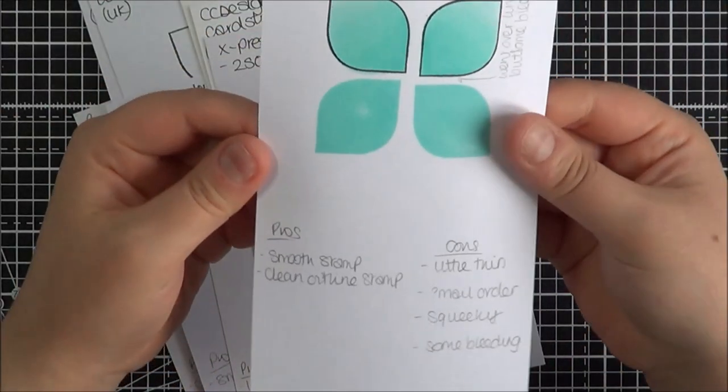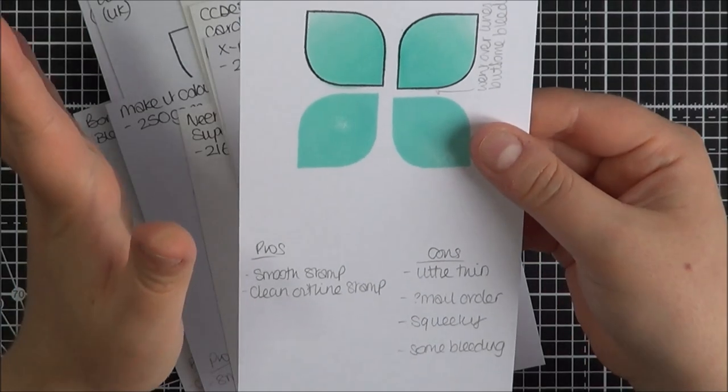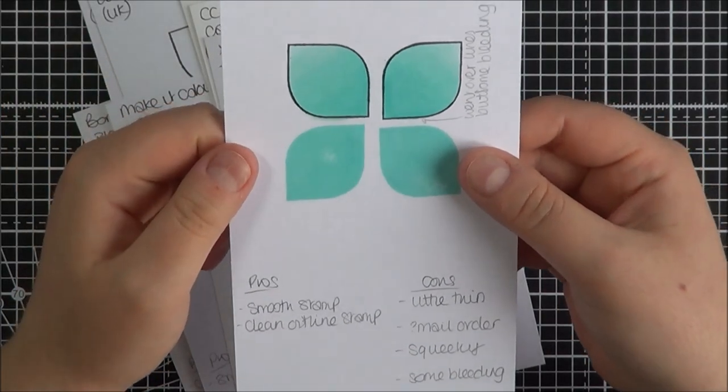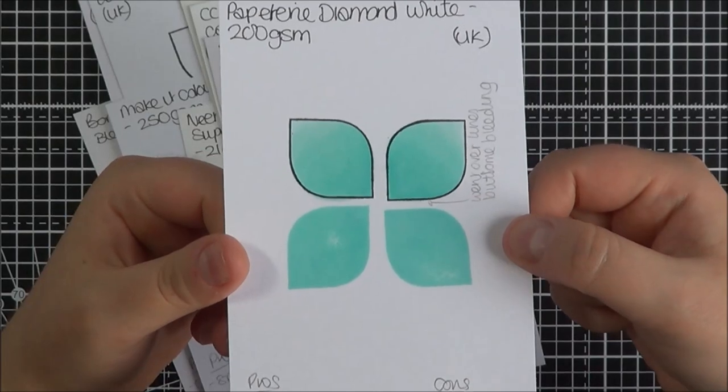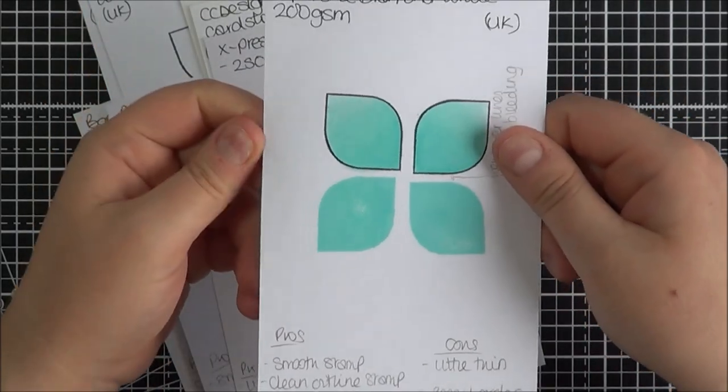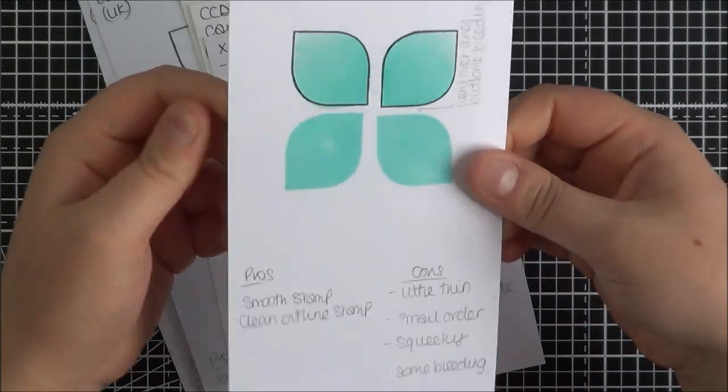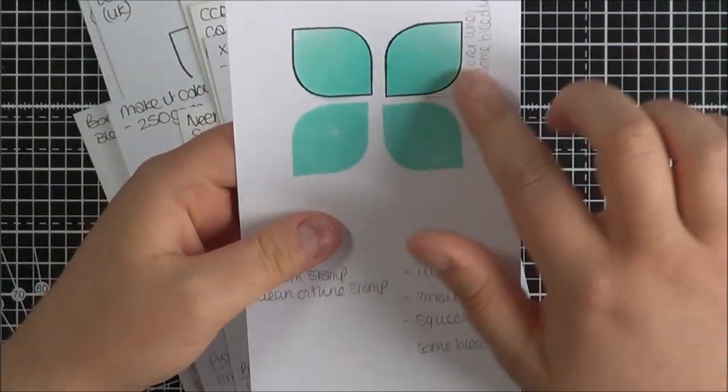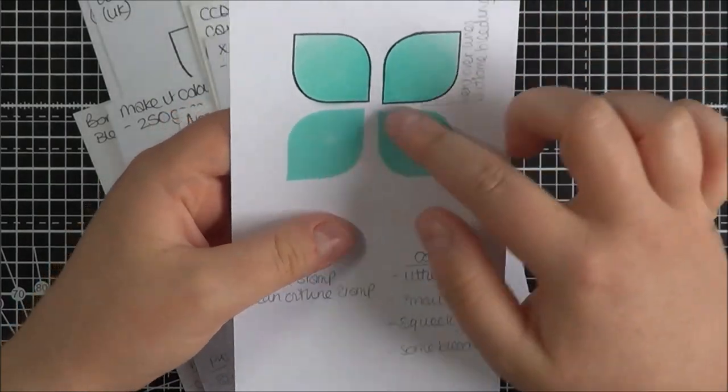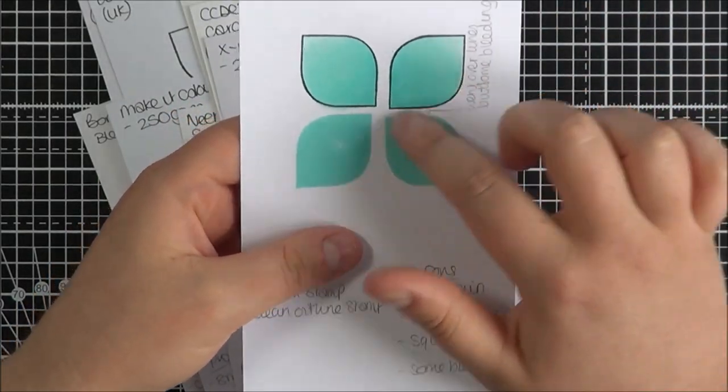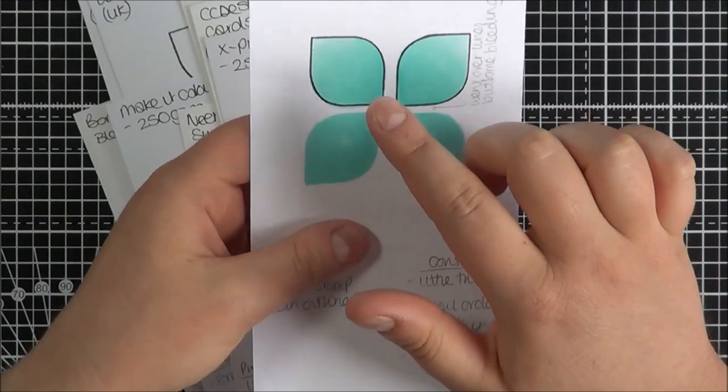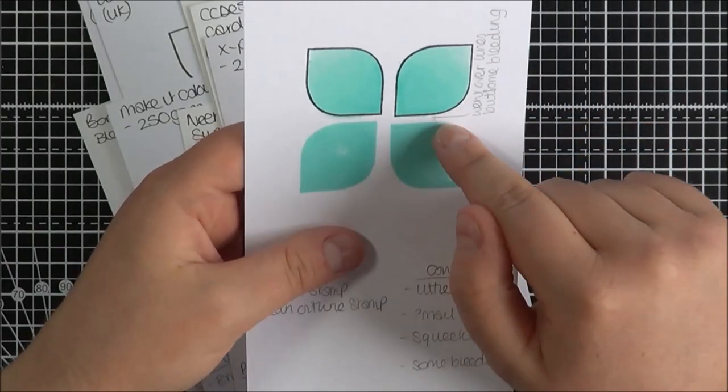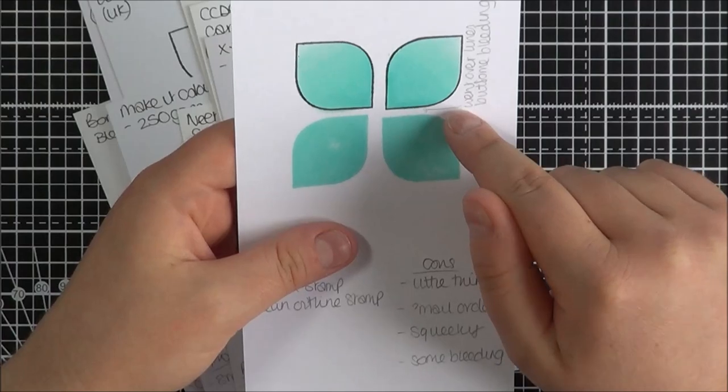And then I've got some Neenah Diamond White cardstock available in the UK. This is 200gsm. It is actually quite thick for 200gsm. I liked the smoothness of it. It stamped quite well with the outline. The blend was quite nice with the Copic markers. There is some bleeding, not a massive amount, but there is some.